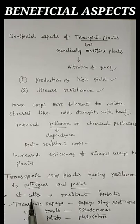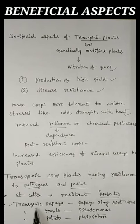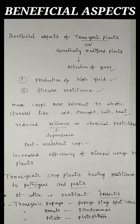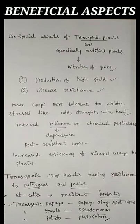To summarize: BT cotton is resistant against insects; transgenic papaya is resistant against papaya ringspot virus; transgenic tomato is resistant against Pseudomonas; and transgenic potato is resistant against the fungus Phytophthora.